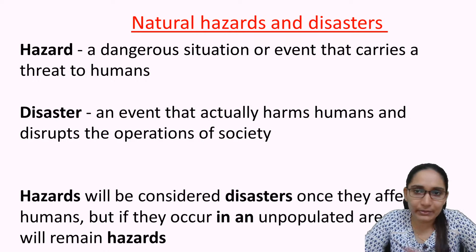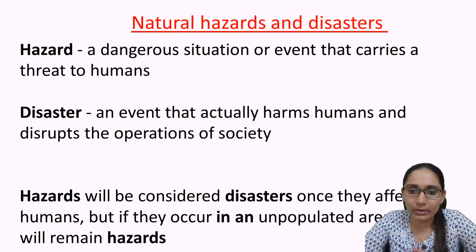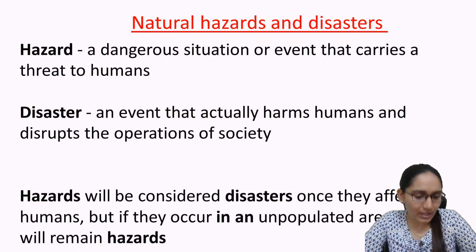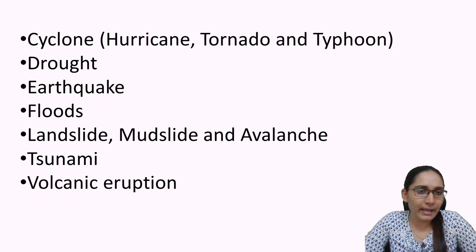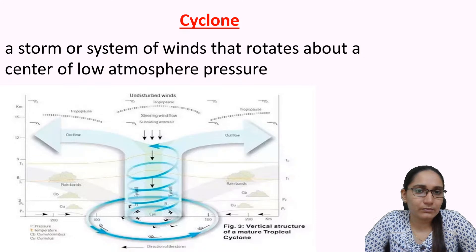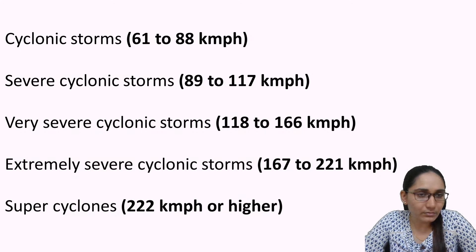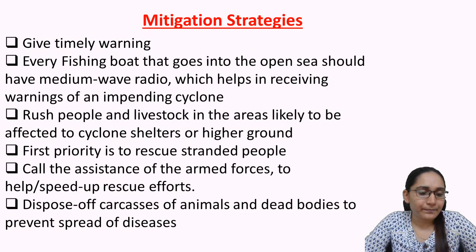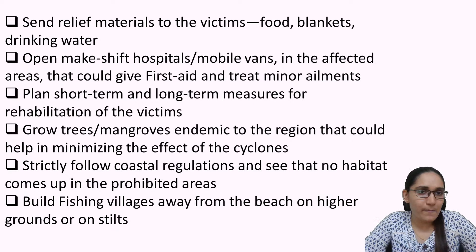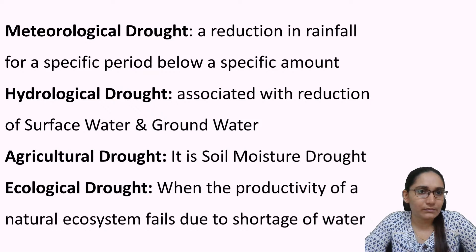We were dealing with natural hazards and disasters. You can quickly go through in one or two minutes whatever we have learned till yesterday. We covered cyclone, cyclonic storms, different types of cyclones that hit the Indian coast recently, and mitigation strategies. We also covered drought — meteorological drought, hydrological, agricultural, and ecological — and the mitigation strategies of drought.